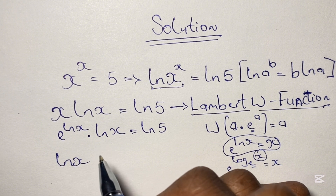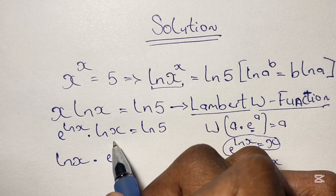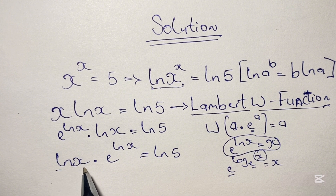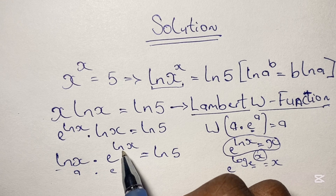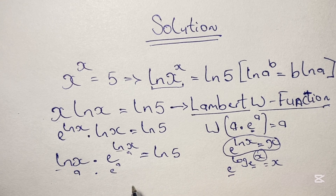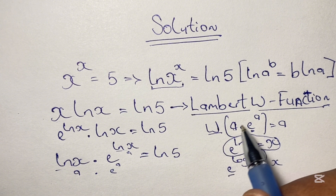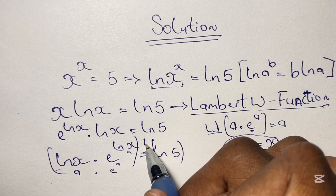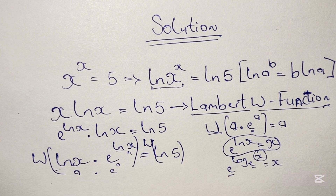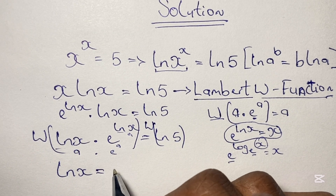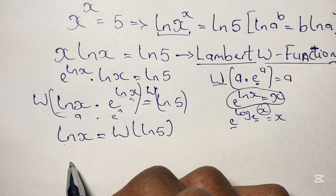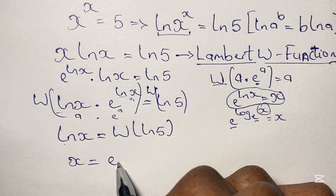Rearranging, we have ln x multiplied by e to the power of ln x equals ln 5. Here we can identify a times e to the power of a, where a is ln x. Applying the W function to both sides, the left side simplifies to ln x, giving us ln x equals W of ln 5. Applying the inverse of ln, we get x equals e to the power of W of ln 5.